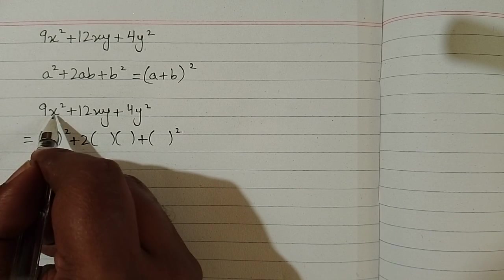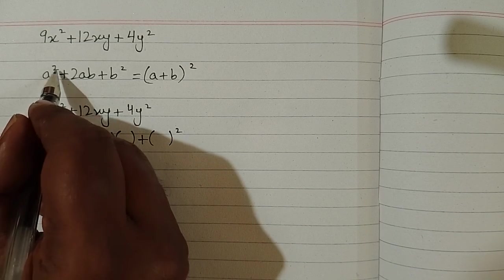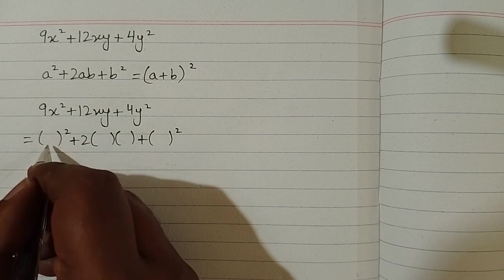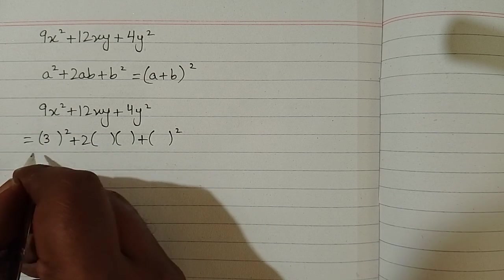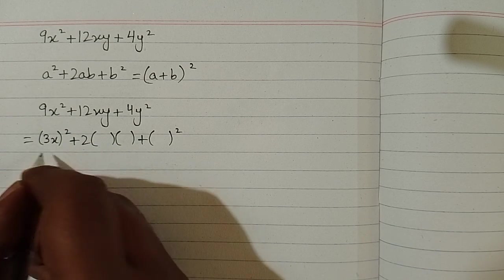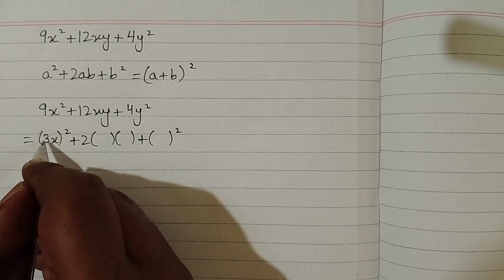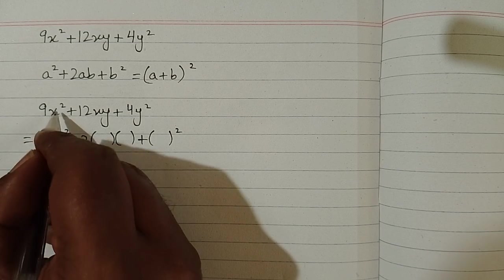Now we have 9x square in place of a square. So we can write 3x in the bracket because square of 3 is 9 and square of x is x square.